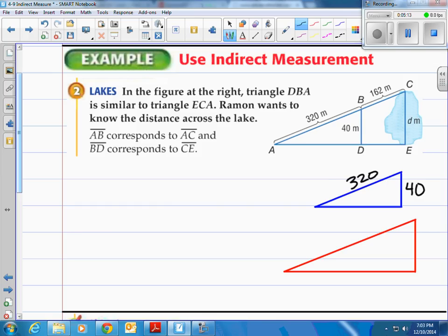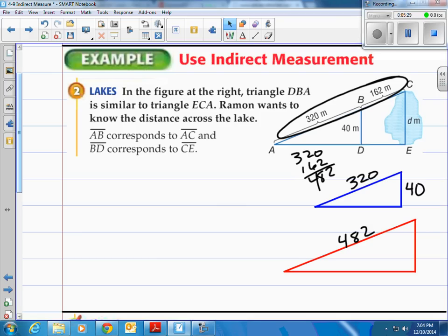We also know this length the long red triangle which is 320 plus the 162. So 320 plus 162 we got ourselves 482. Right there. And now we can find out what our D is going to be.